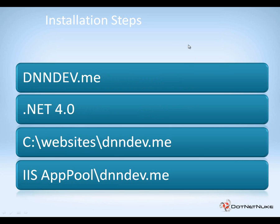The steps we're going to perform in this video, in order to set up our web server: we're going to create a website pointing to the domain dnndev.me, we're going to make sure that the application pool for that website is running under the .NET 4.0 framework, and we're going to point the website to the local folder where we have the files for our .NET Nuke installation — the folder we configured in the previous video. After we set up the website, we'll have to take the identity for the application pool and configure the permissions on that folder. The name we'll be using is IIS APPPOOL\dnndev.me.